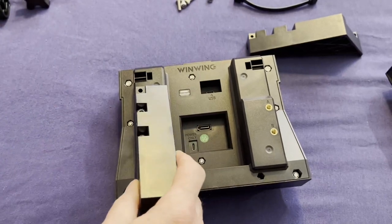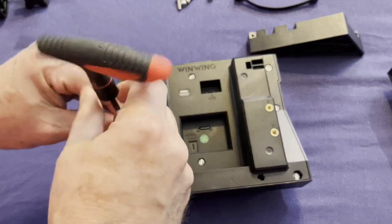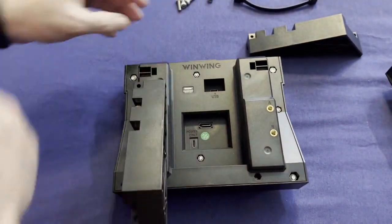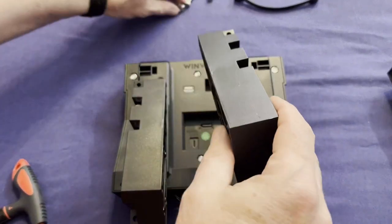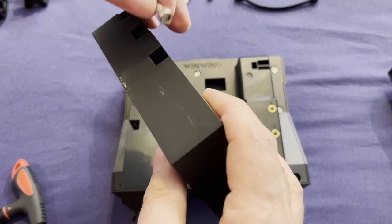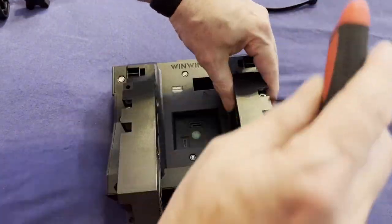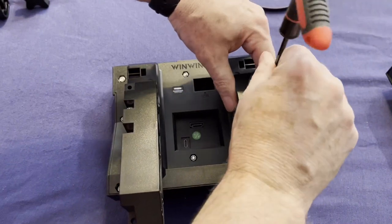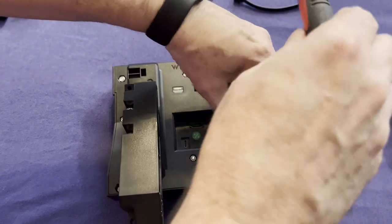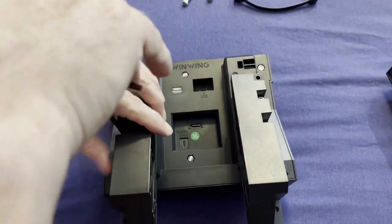I'm going to go ahead and put two bolts there, the shorter of the M5s. Snug that up. We'll do the same thing with the other bracket.